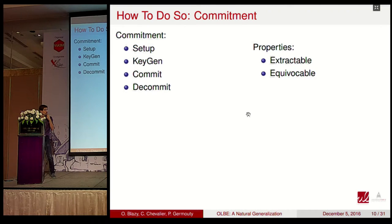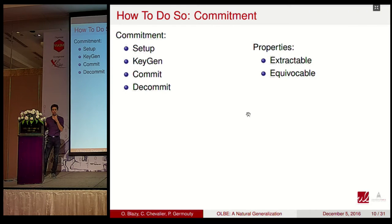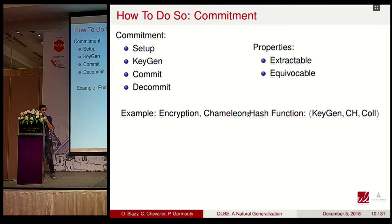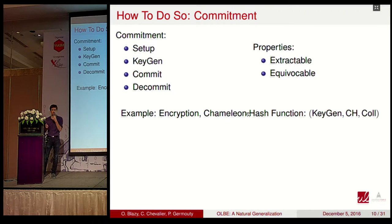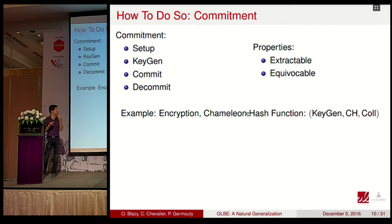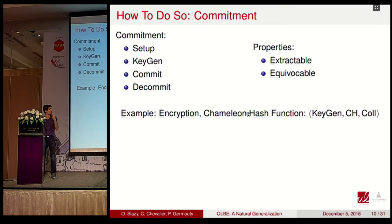A commitment is equivocable if we are able to give a proof that we committed a certain value that is not the one we actually committed. An example of an extractable commitment is an encryption scheme — knowing the decryption key, we can decrypt and see what was committed.